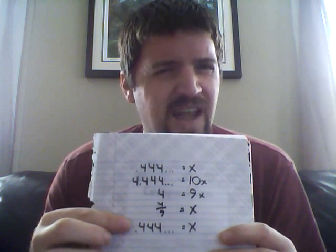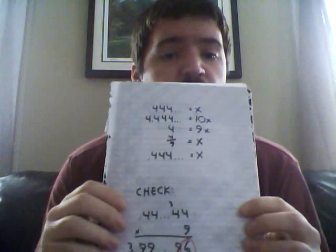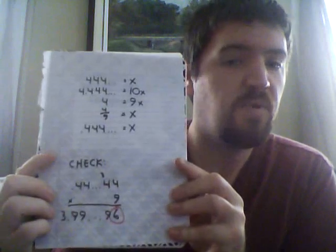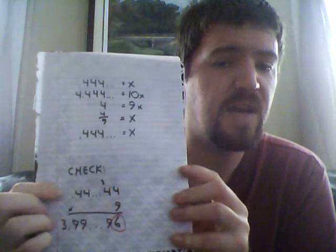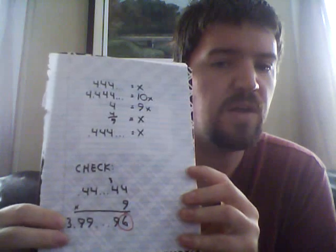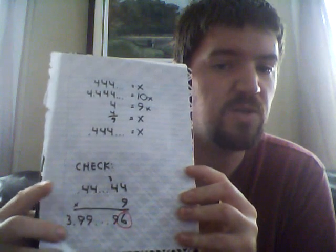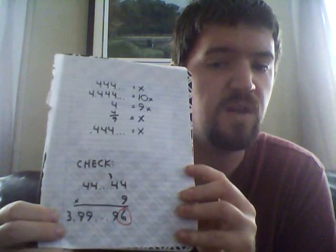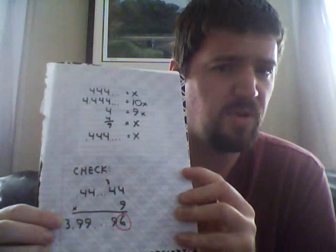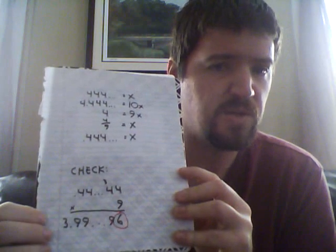But you don't exactly have 0.4 repeating here. If you do the check, doing the math backwards, you'll find that 0.4 repeating times 9 does not give you 4. You have a 6 on the end, when 4 times 9 equals 36, you carry the 3, and it gives you 9s all the way to the end, to where you have 39, and you put in the decimal point, and you have 3.9 repeating 6.